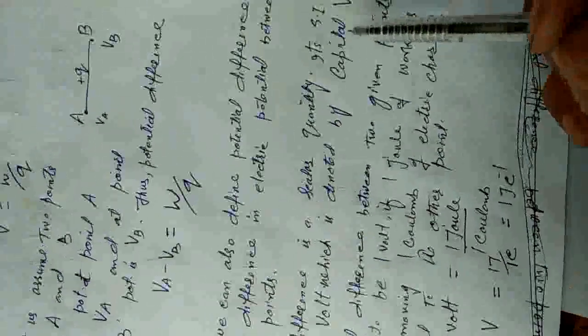The SI unit of potential difference is volt, denoted by capital V. The potential difference between two given points is said to be one volt if one joule of work is done in moving one coulomb of electric charge from one point to the other. One volt equals one joule divided by one coulomb. Thank you.